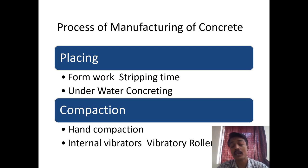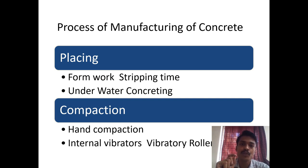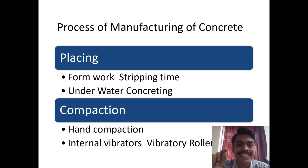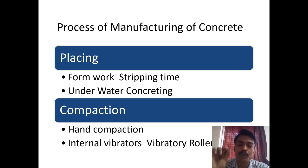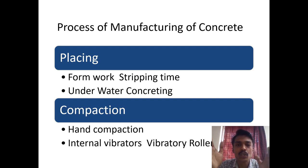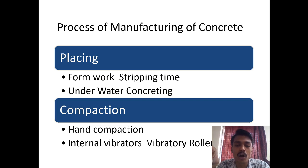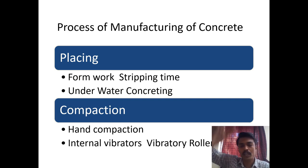When you are not concentrating well on compaction, you can see after removing the formwork that honeycomb will be there — you can see the aggregates get concentrated in a particular location. This is especially a problem in columns because we pour a large volume of concrete into them.